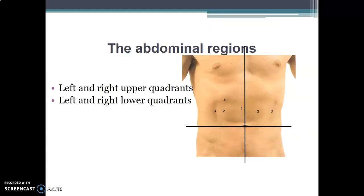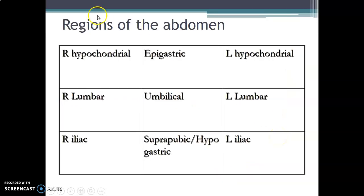Drawing a vertical line from the xiphoid process to the pubic symphysis and a transverse line through the umbilicus gives four quadrants — upper right and left, lower right and left. Through the transpyloric and transtubercular lines as transverse planes, and mid-clavicular to mid-inguinal vertical lines on both sides, you obtain the nine regions.